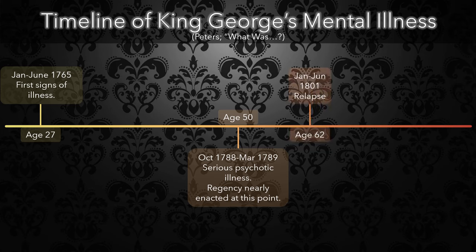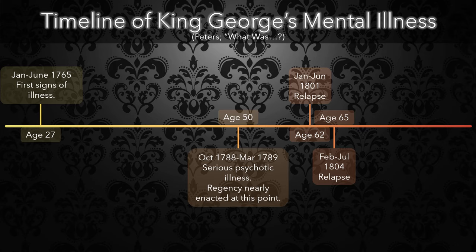The king relapsed 12 years later in 1801, but his symptoms were milder. At the time, Prime Minister Pitt proposed religious reform policies, which involved removing some restrictions on Catholics, which the king strenuously opposed. King George blamed his mania on pressure over the debate on religious freedom. Illness struck again in 1804, but there is little documentation surrounding this short, mild episode other than some physicians' notes.